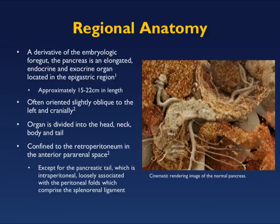The regional anatomy is derivative of the embryologic foregut. The pancreas is an elongated endocrine and exocrine organ with a length of up to 22 centimeters, though absolute length is not a criterion for defining disease. We divide the organ into head, body, and tail — with a neck and uncinate — but borders are somewhat arbitrary. It lies in the anterior pararenal space, except for the pancreatic tail, which is essentially intraperitoneal.